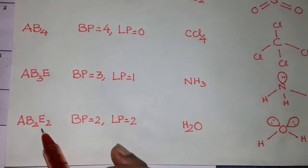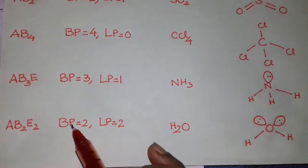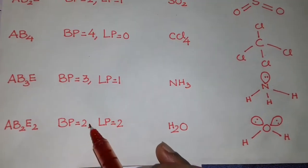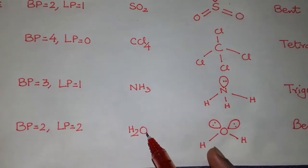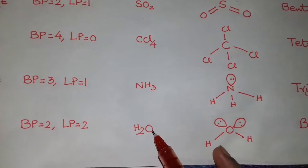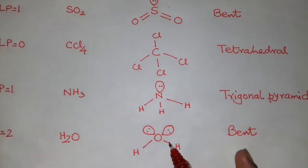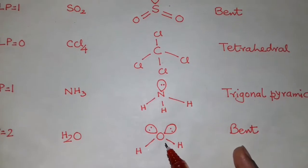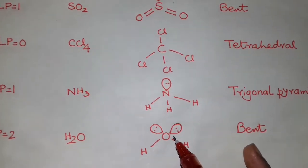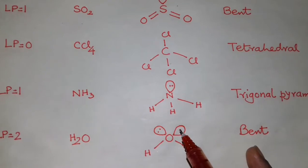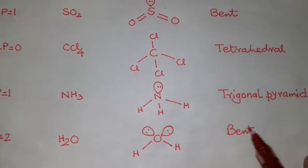Next is AB2E2, H equals 4: bond pair is 2 and lone pair is 2. In the case of H2O, oxygen has two lone pairs, and the shape is bent. Starting from the tetrahedral H value, it becomes bent.